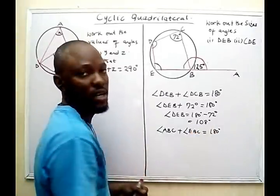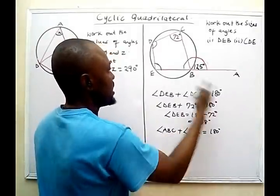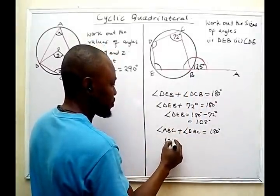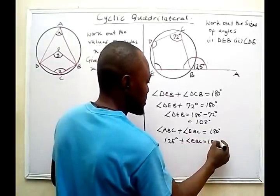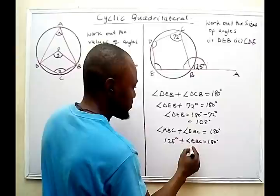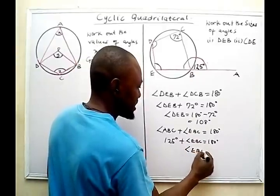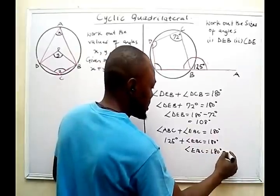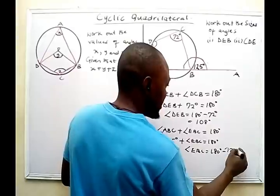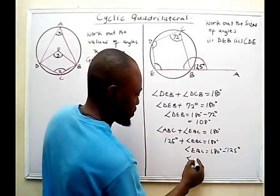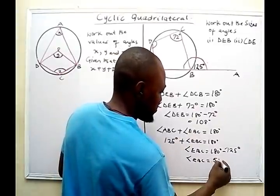The reason for this is the sum of angles on a straight line — different from the first theorem. So ABC is 125 degrees, so: 125 degrees plus angle EBC equals 180 degrees. Therefore, angle EBC will be 180 degrees minus 125 degrees, which gives me 55 degrees.